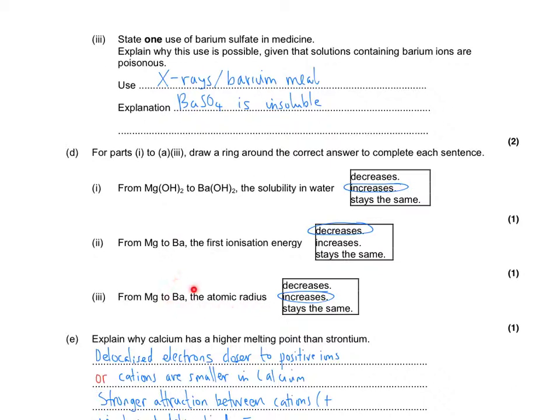Then we have the atomic radius. Well, barium has got the most shells, therefore has the largest atomic radius.